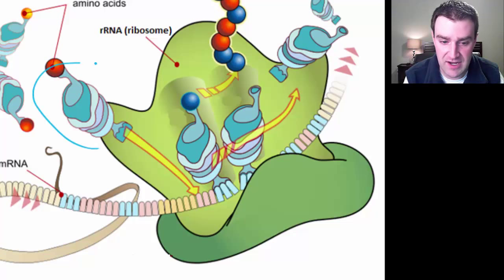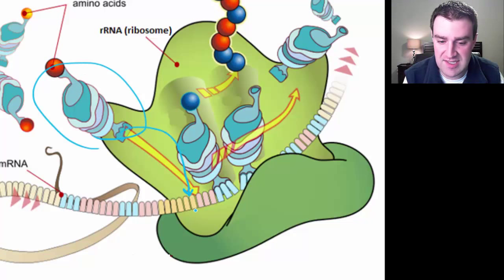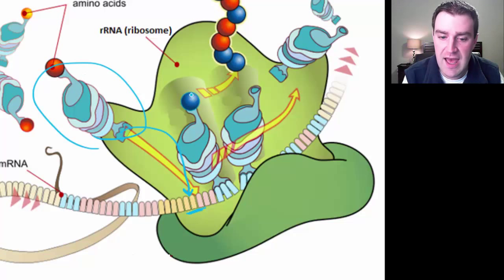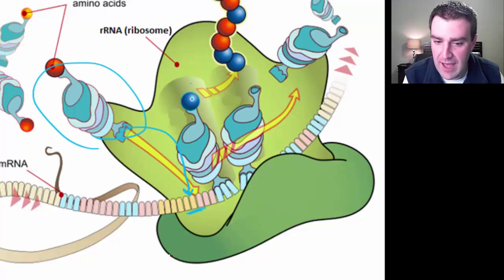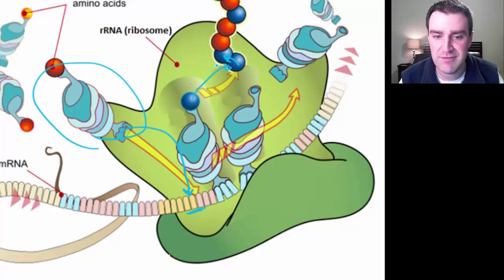Here's a quick image of that: a tRNA brings in the amino acid to the right spot, its anti-codon pairs up with the mRNA codon, and then the rRNA inside grabs the amino acid and puts it right next to the one that came in before.